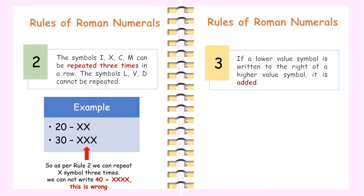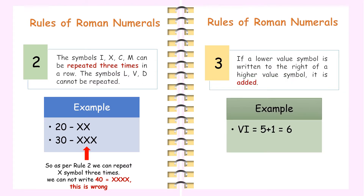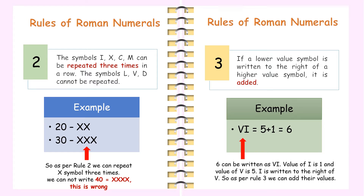Rule 3: If a lower value symbol is written to the right of a higher value symbol, it is added. For example, 6 can be written as VI. The value of I is 1 and the value of V is 5. Here I is written to the right of V, so as per Rule 3 we add their values: 5 plus 1 equals 6.